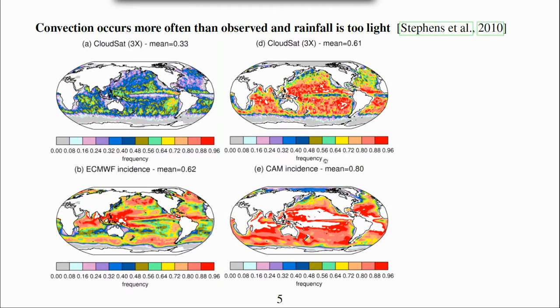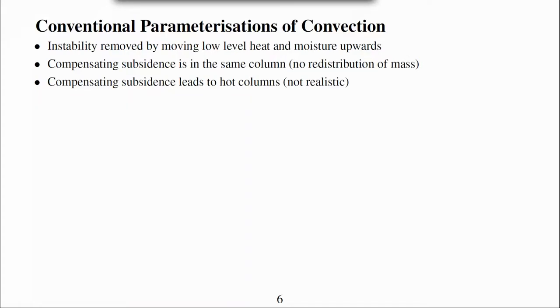These results from Stephen et al show that parameterised convection occurs more often than observed rainfall and is too light. What is going wrong in parameterisations of convection and why have these problems been so difficult to resolve?